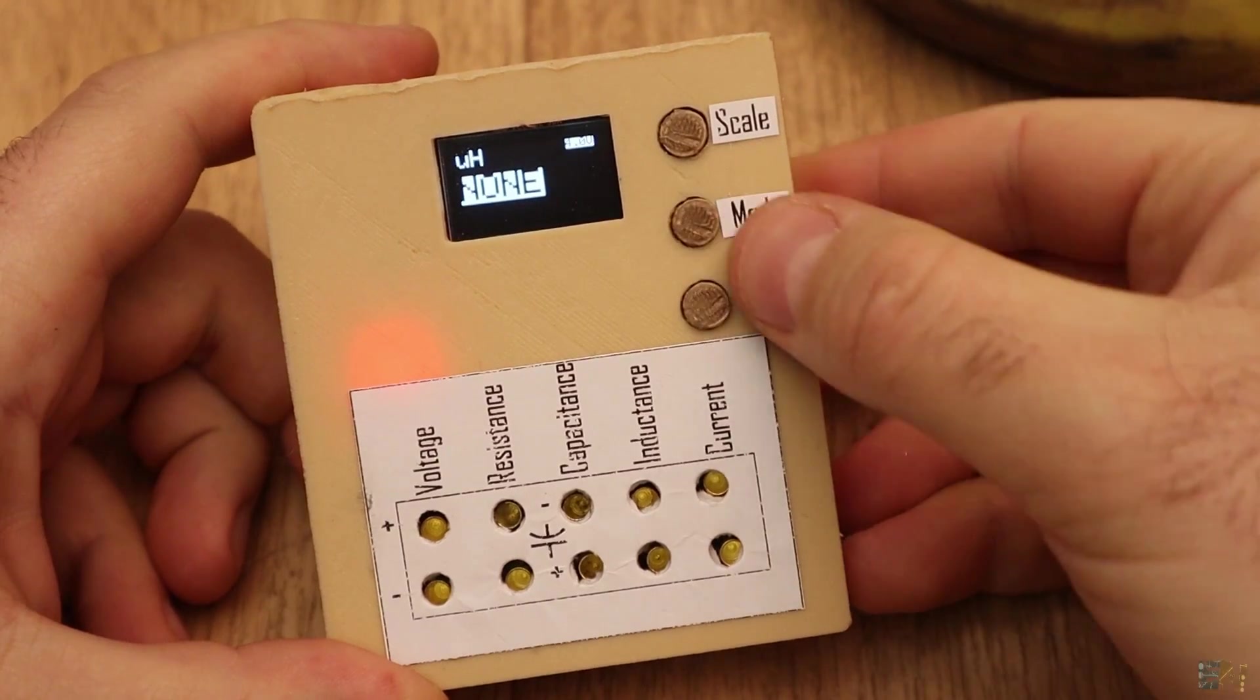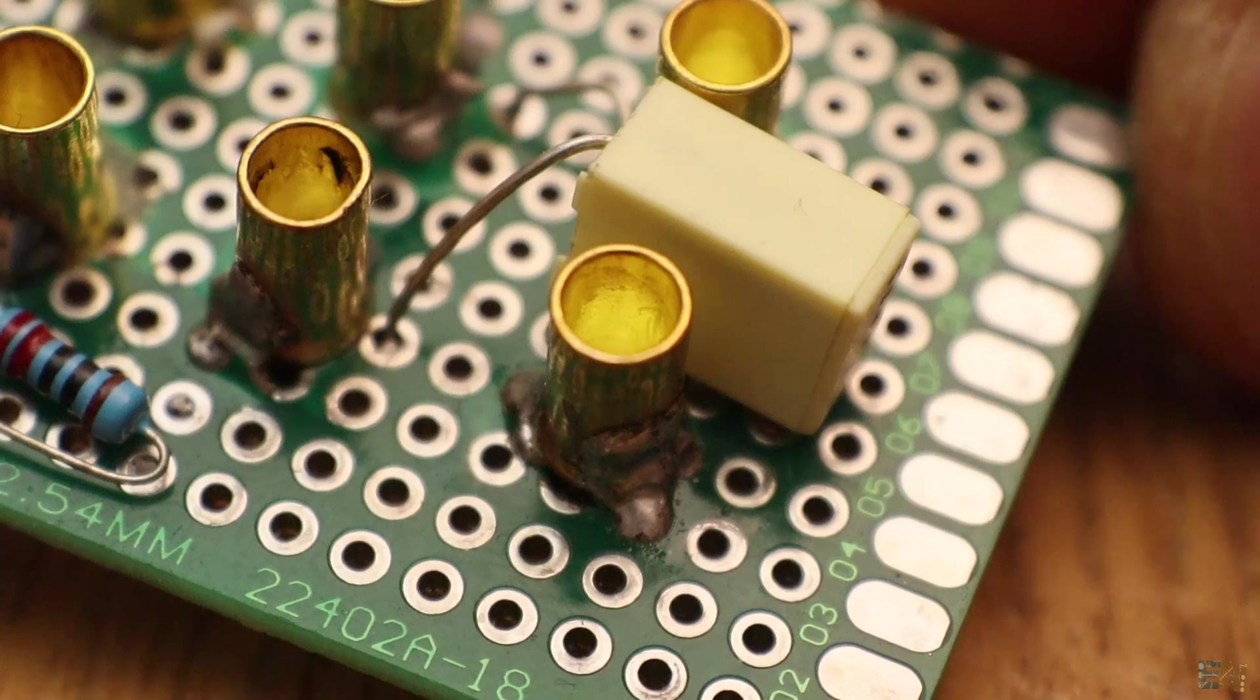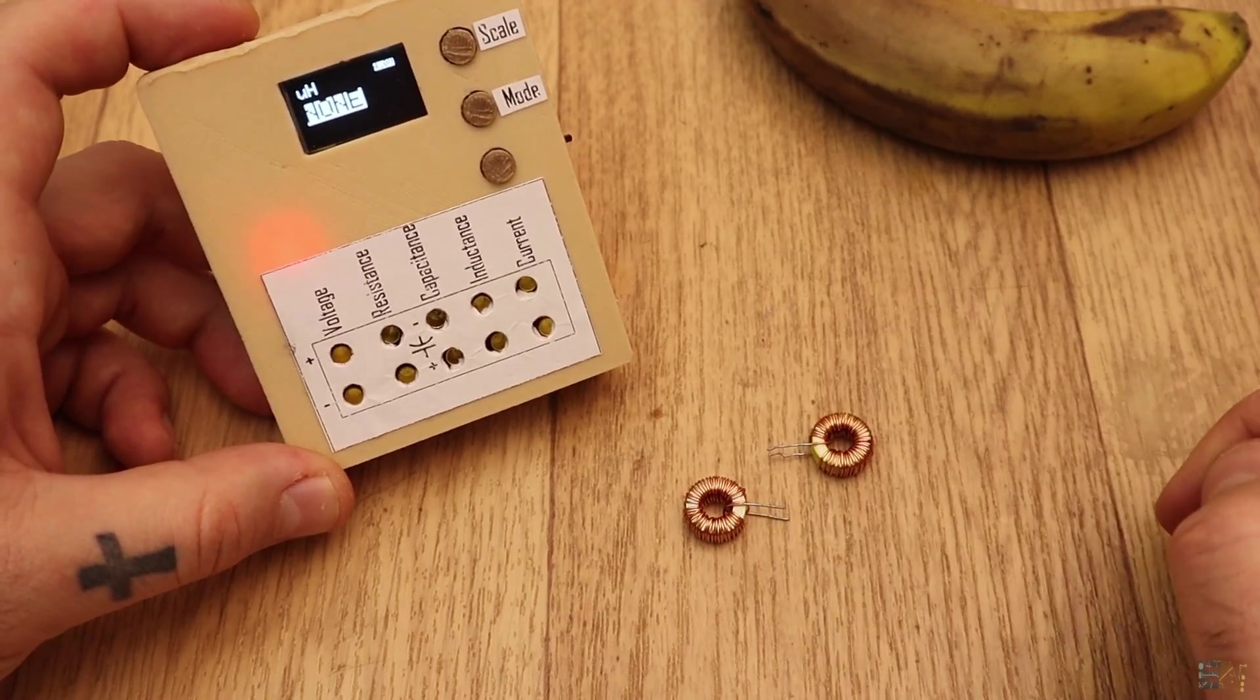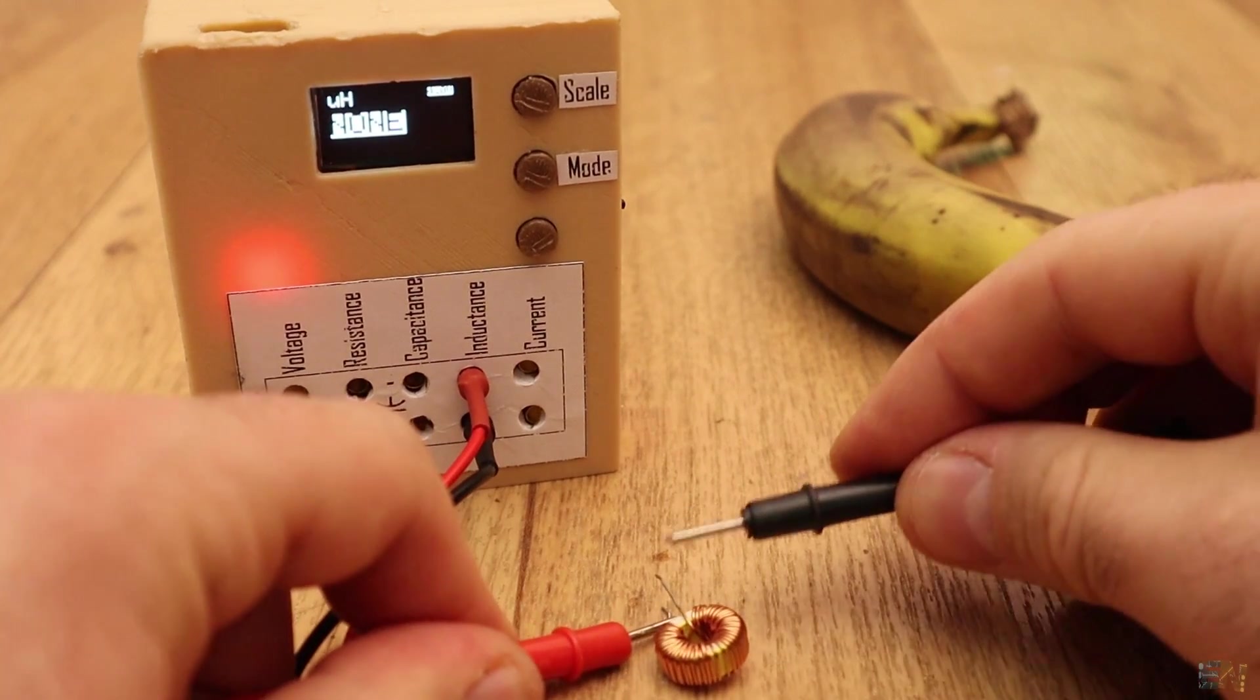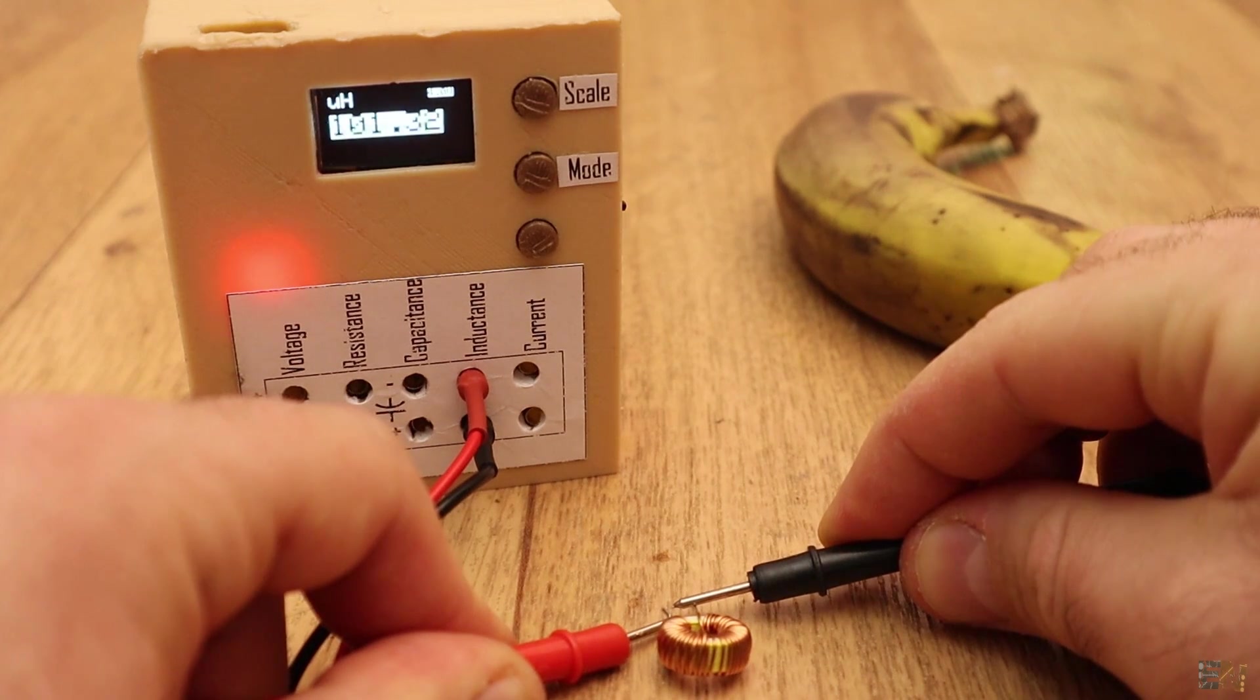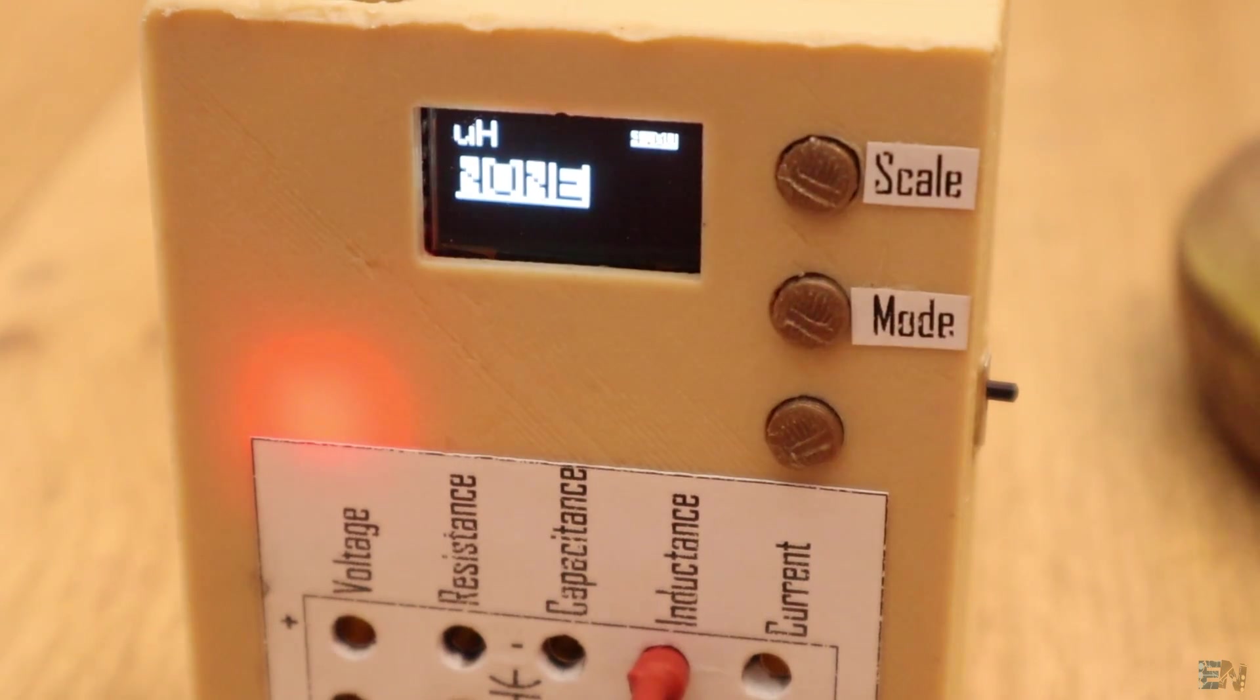Now I push the button and I get into the inductance mode. This uses an LC tank and measures the resonant frequency, and by that we get the inductance value. For example, this is a 100uH inductor. Before I place it, the multimeter displays none. Then I place the inductor and here we have the value. I'm not sure about the maximum range of the inductor meter.